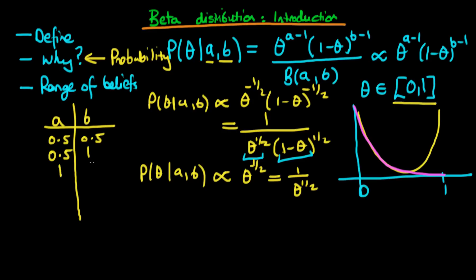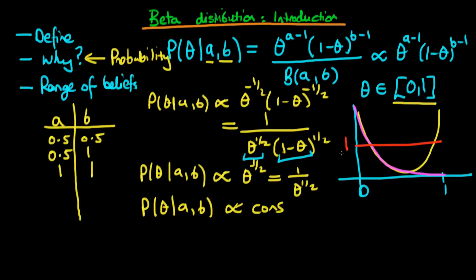Now consider the case when both a and b equal 1. The probability of theta given a and b is proportional to theta to the power a minus 1, which is theta to the power 0 — just a constant — times 1 minus theta to the power 0, also a constant. So the probability is just constant across the range, meaning we get a uniform probability density over 0 to 1, with a value of 1 so the area integrates to 1. So already we can see we can specify different prior beliefs just by varying parameters a and b.